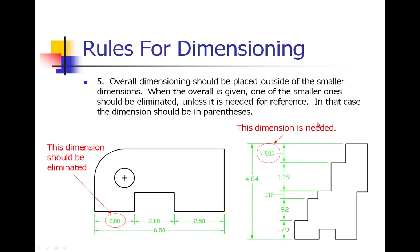Number five: overall dimensioning should be placed outside of the smaller dimensions. Our overall dimension of 6.50 inches is on the outside of these smaller dimensions. When you use the overall dimension, one of the smaller ones should be eliminated. We don't need all three of those smaller dimensions because we can do a little bit of math to figure out the last one.